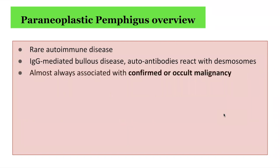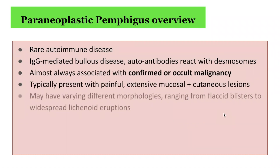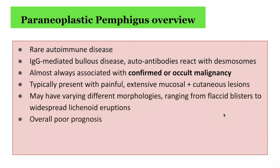It is almost always associated with confirmed or occult malignancy. Patients typically present with painful, extensive mucosal as well as cutaneous lesions. As already emphasised, they may have varying morphologies ranging from flaccid blisters to widespread lichenoid eruptions.